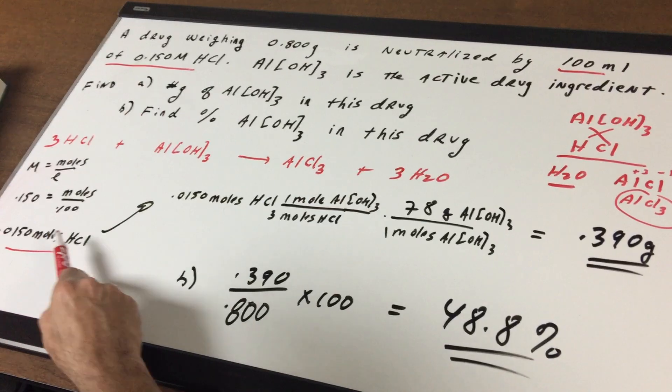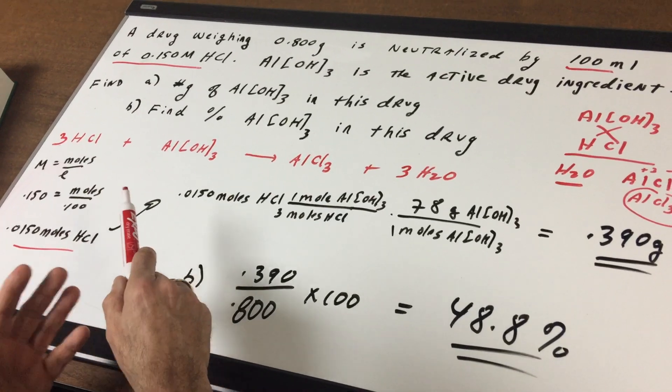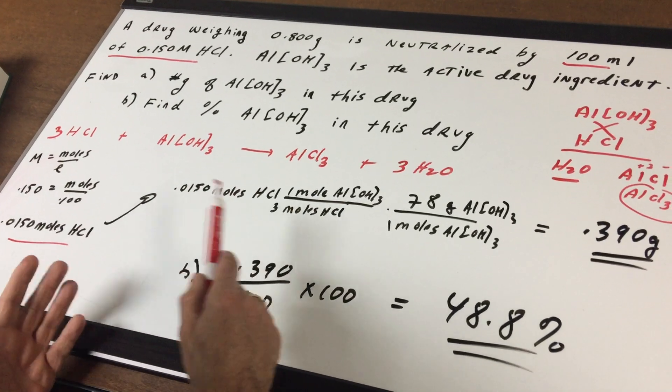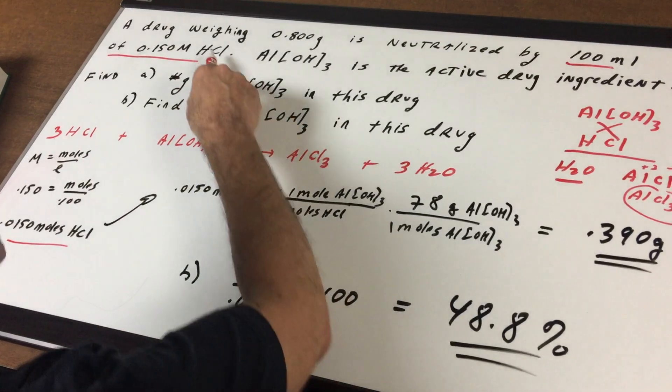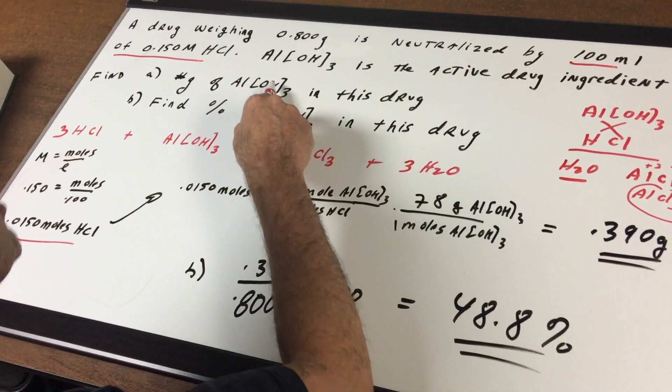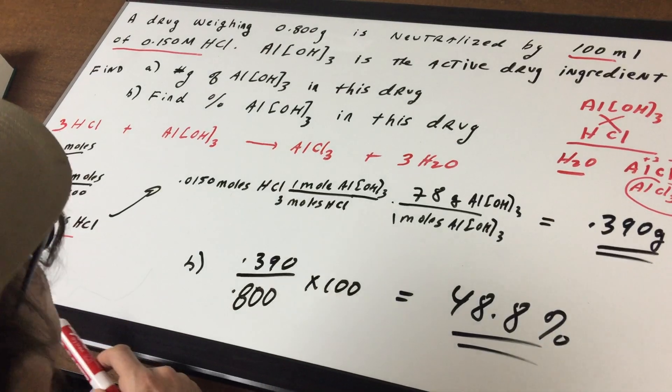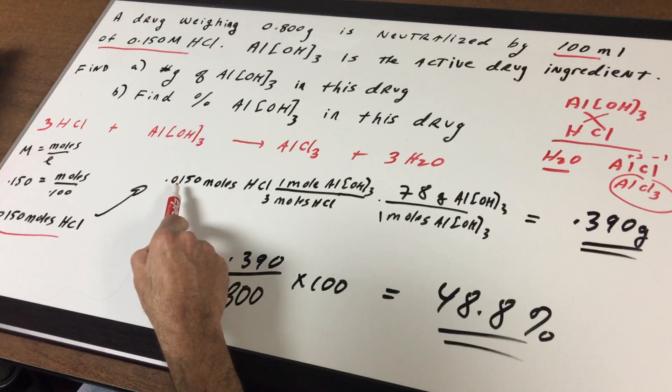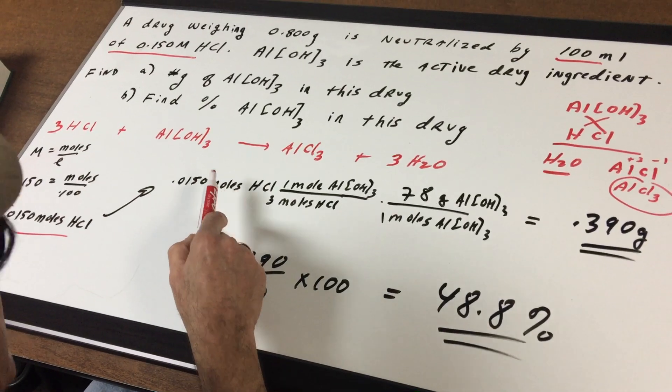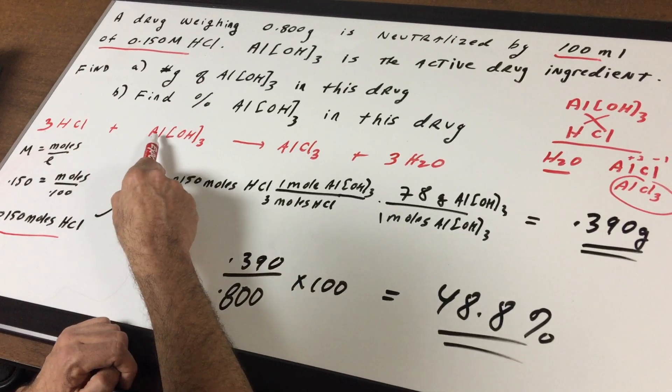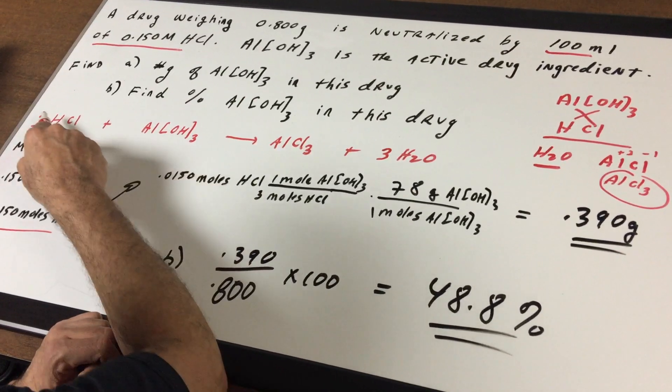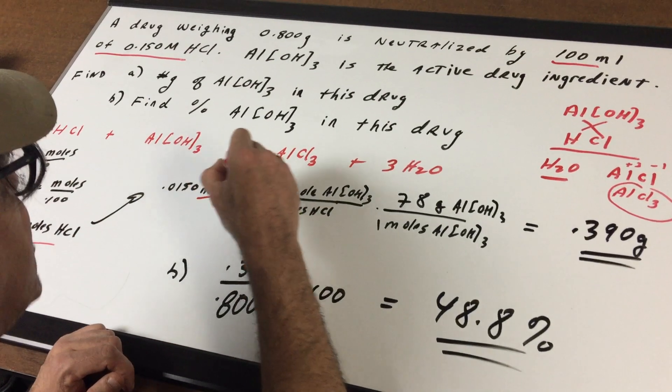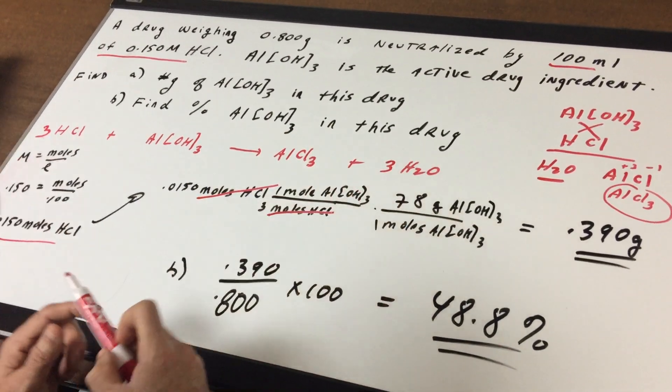Now, moles of acid does not neutralize the exact number of moles of base here because HCl has one H and aluminum hydroxide has three OHs. So we got to be careful with stoichiometric relationships. So I'm going to take the 0.150 moles of HCl and look in my eyes.